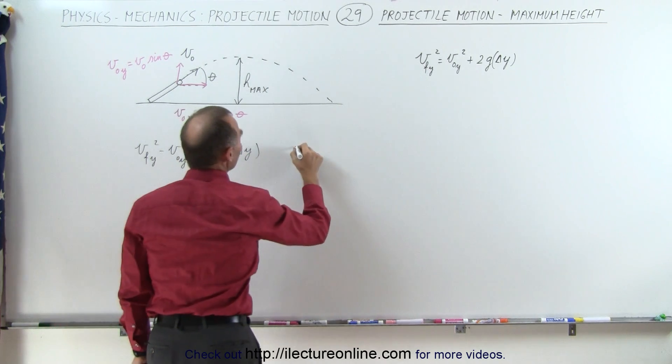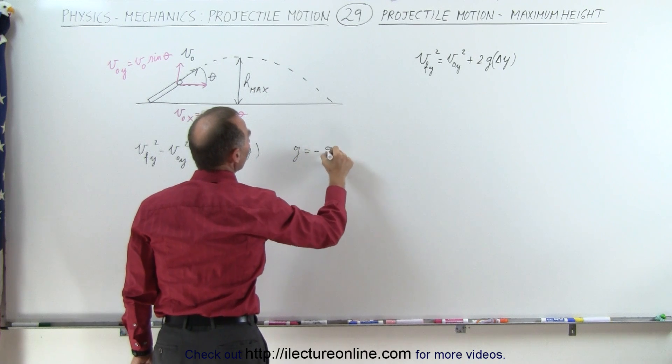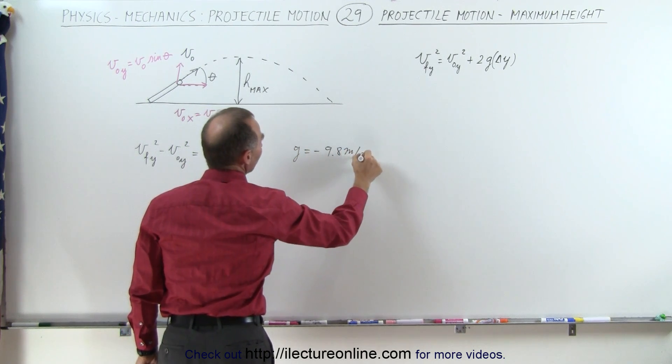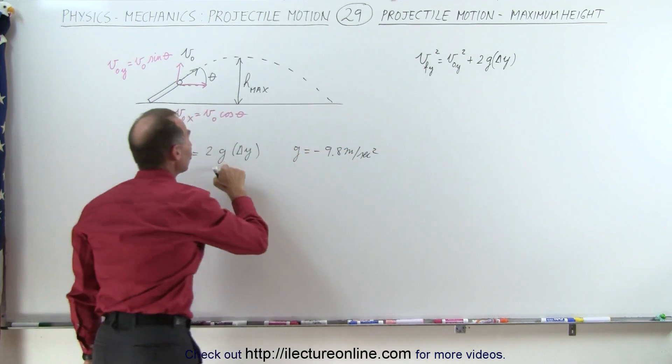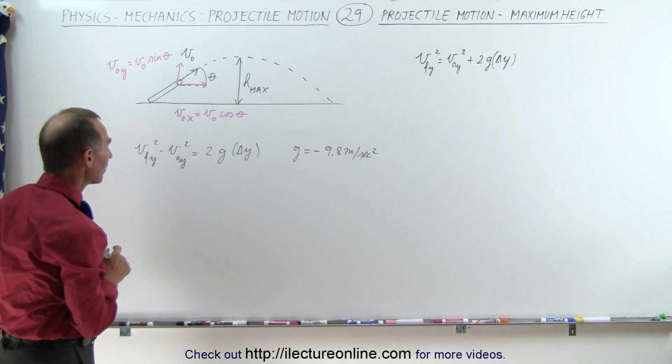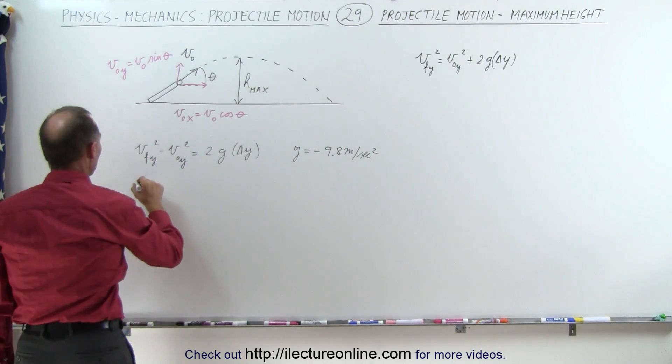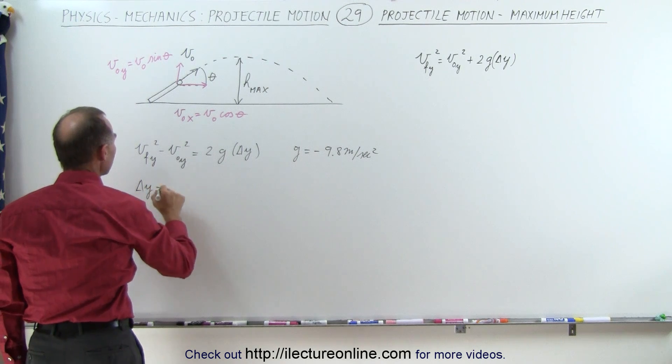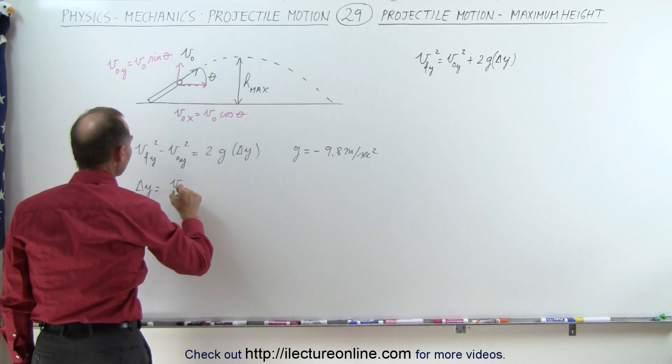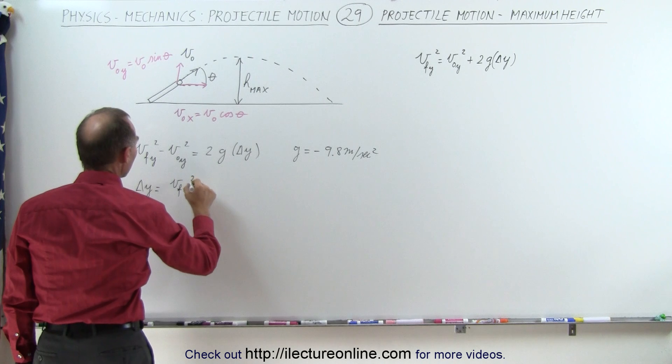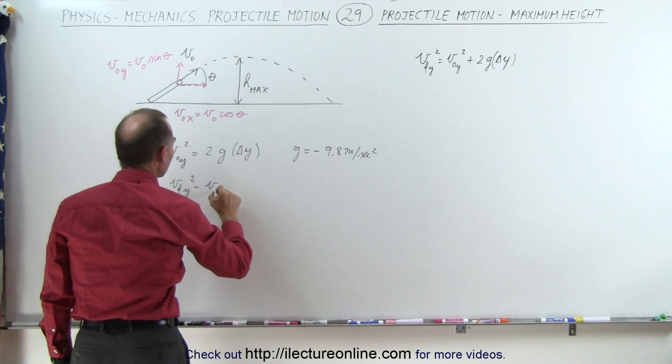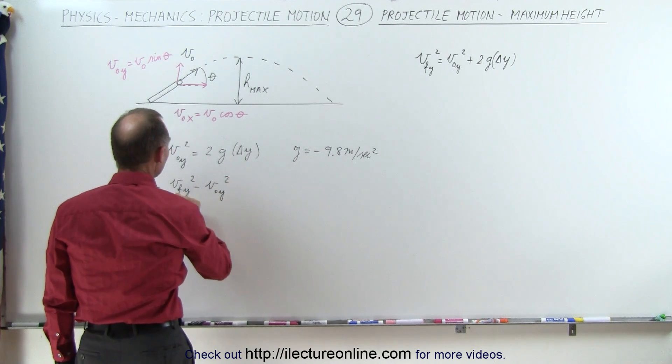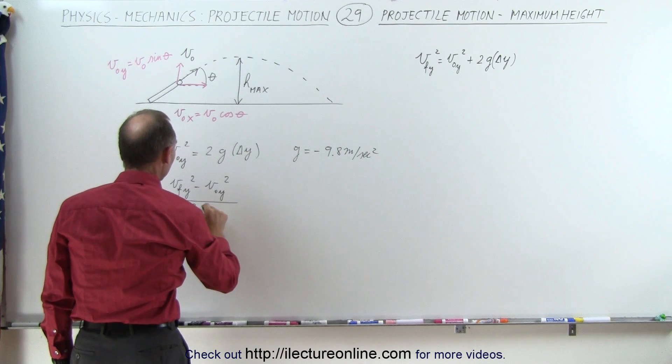Now remember that g is actually a minus 9.8 meters per second squared, that means in this case g is a negative quantity. Solving this for delta y, we say that delta y is therefore equal to v final in the y-direction squared, minus v initial in the y-direction squared, divided by the coefficients 2 times g.